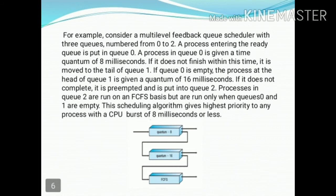Consider a multi-level feedback queue scheduler with three queues: Q0, Q1, and Q2. Processes entering the ready queue are put in Q0. Q0 uses a time slice of 8 milliseconds. If the process completes execution within 8 milliseconds, it releases control from the CPU. If it does not complete within 8 milliseconds, it is moved to Q1.